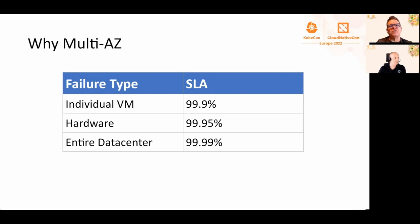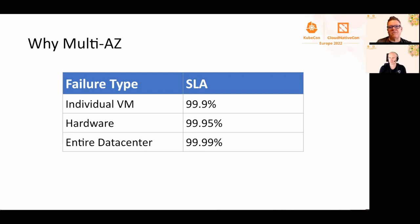We'll start with just availability zones. Availability zones are built by clouds to mitigate certain types of failure. There's a chart about managing your failures - the SLAs that clouds give on an individual VM is three nines. That's not bad, but it's not great either. That's still minutes or hours of downtime.